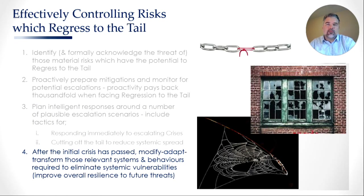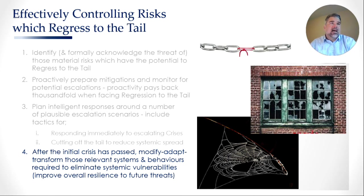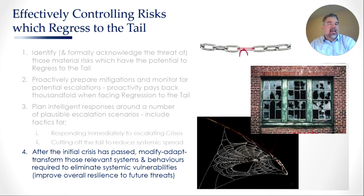The fourth strategy, which I think is quite important but has flown a little under the radar, is this: after the initial crisis has passed, we need to actively modify, adapt, or transform those relevant systems and behaviors which will allow us to eliminate systemic vulnerability — in other words, improve our overall resilience to future threats. We have to acknowledge that the reason coronavirus impacted us all so harshly is because our societal existence retained numerous systemic vulnerabilities which made us weak in the presence of the virus. It's not enough to just recover from the initial crisis; we also have to fix the broken windows, the weak chain links, and those systemic holes and gaps so we can become more resilient to future crises.